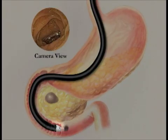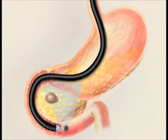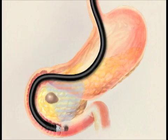At this point, the doctor switches the endoscope view from the camera to the ultrasound. In the ultrasound view, sound waves are passed through the lining of the stomach and into the pancreas to generate a clear image of the pancreas.